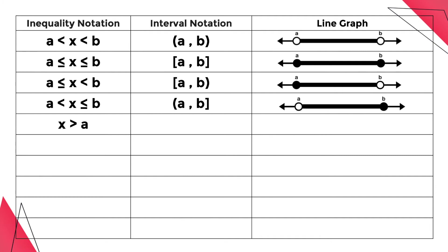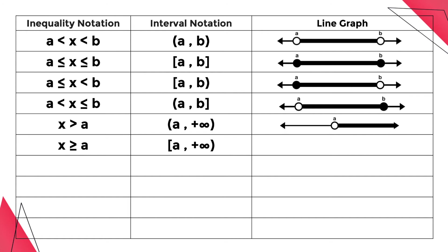The fifth inequality notation means all real numbers x greater than a, which is represented by the interval notation open parenthesis a, comma, positive infinity, close parenthesis. And this is how it looks like in the graph. The next one means all real numbers greater than or equal to a, which is represented in interval notation using open bracket a, comma, positive infinity, close parenthesis. And this is how it looks like in the graph.